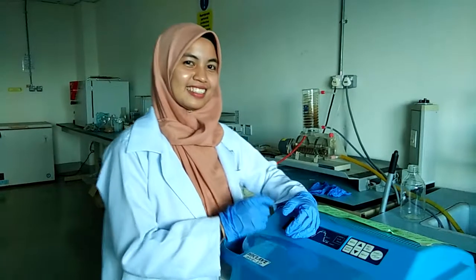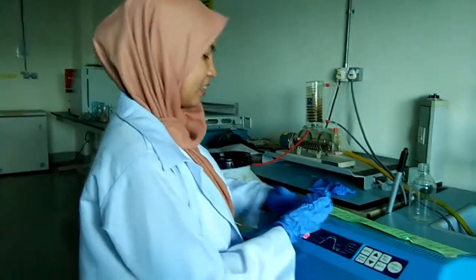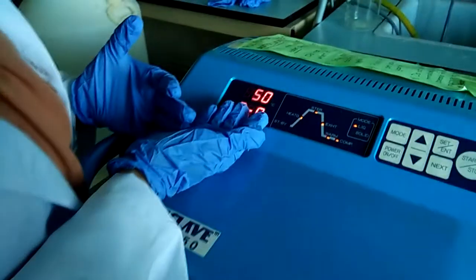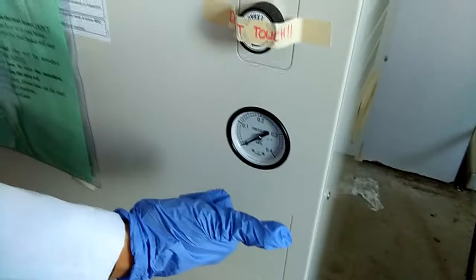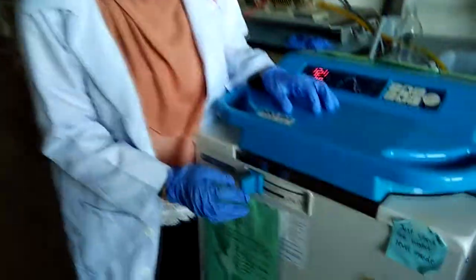Before opening the autoclave lid, make sure the temperature of the autoclave is below 60 degrees Celsius so that it won't be too hot to carry. Then check the pressure before opening the lid. Make sure the pressure is at zero before opening the autoclave for safety purposes.